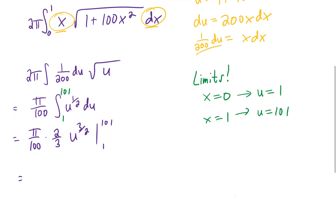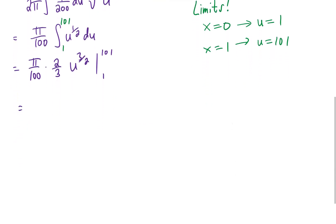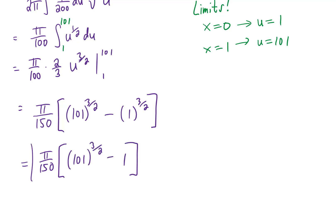Now we're in a position where we can just plug in the upper and lower limits of integration. In this line, I also reduced the 2 with the 100, leaving a 50 in the denominator. Multiplying that 50 by the 3 gave us the 150. And we pretty much have our final answer here. If we recognize that 1 to the 3 halves power is just 1, this will be our final answer.